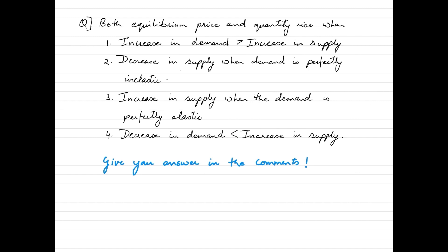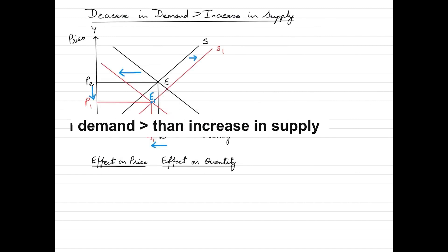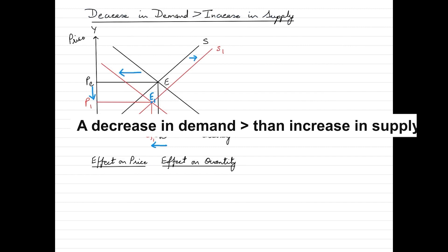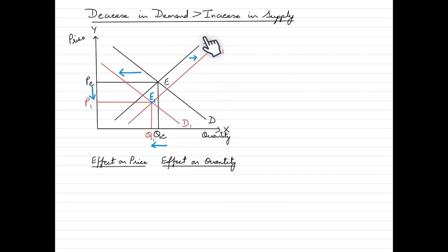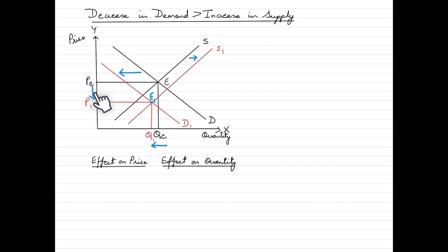Now let's look at the scenario where a decrease in demand is greater than the increase in supply. The market starts at equilibrium E, with price at Pe and quantity at Qe. Demand shifts to the left from D to D1, and supply shifts to the right from S to S1. Let's examine how equilibrium price and quantity are impacted when the decrease in demand outweighs the increase in supply.